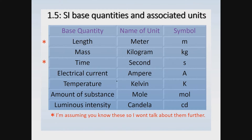The base quantity for mass — you might think it's the gram, but it's actually the kilogram. A kilogram equals a thousand grams, and the symbol for the base unit of mass is kg.